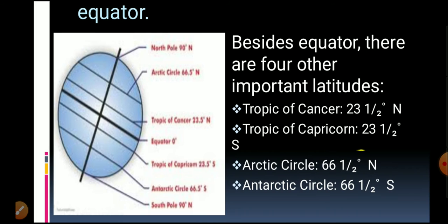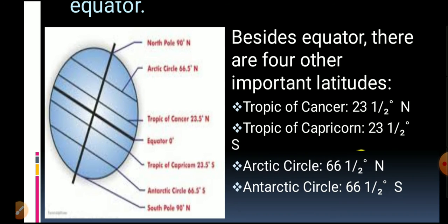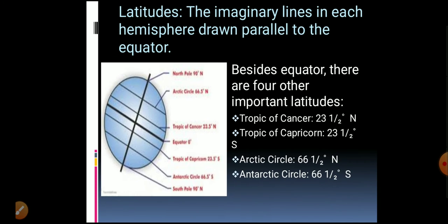There are four other important latitudes: the Tropic of Cancer, the Arctic Circle, the Tropic of Capricorn, and the Antarctic Circle. We can also see the North Pole and the South Pole in the image.